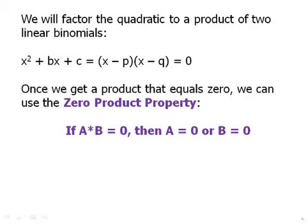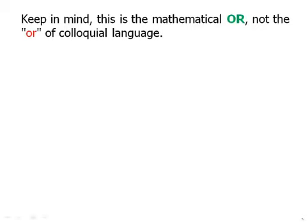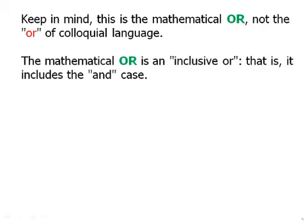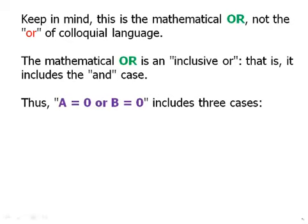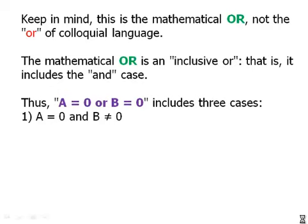And before we go on, let's think about this statement for a minute. Keep in mind that the or that appears in that statement is the mathematical or, not the or of colloquial language. What's the distinction I'm drawing here? The mathematical or is an inclusive or. That is, it includes the and case. Thus, a equals zero or b equals zero includes three cases. It could be that a equals zero and b doesn't. It could be that b equals zero and a doesn't. Or it could be that they both equal zero at the same time.